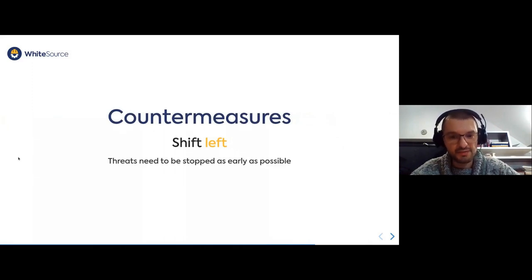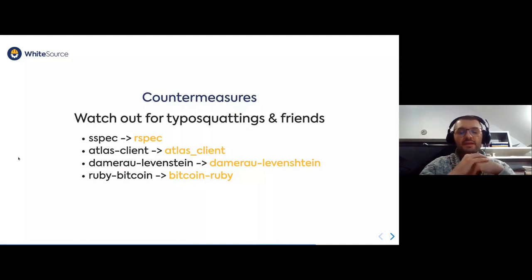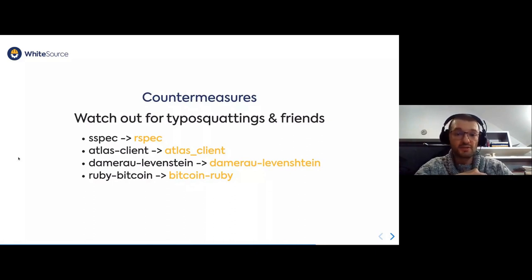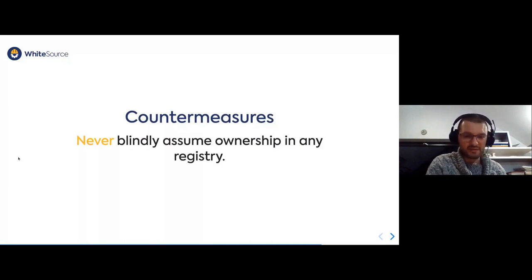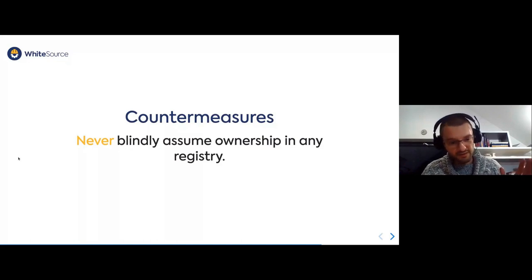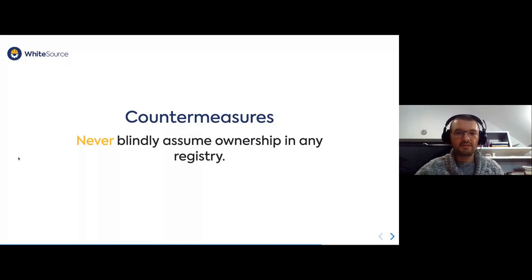You should shift left with your security, which means you need to stop threats as soon as possible — ideally before developers have a chance to even use given packages. You should watch out for typosquatting and friends; they happen quite often. You should never blindly assume ownership of a package in a registry. What you see on GitHub, GitLab, or any other source code sharing place may not be the same as what you see in the registry. You can have a release with legit code on GitHub and malicious code in NPM.